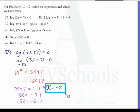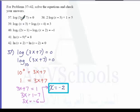This is the solution for number 37. To verify, we substitute x equals negative 2: that gives log of 3 times negative 2 plus 7, which is negative 6 plus 7, so log of 1 is equal to 0. Therefore this is a valid answer.